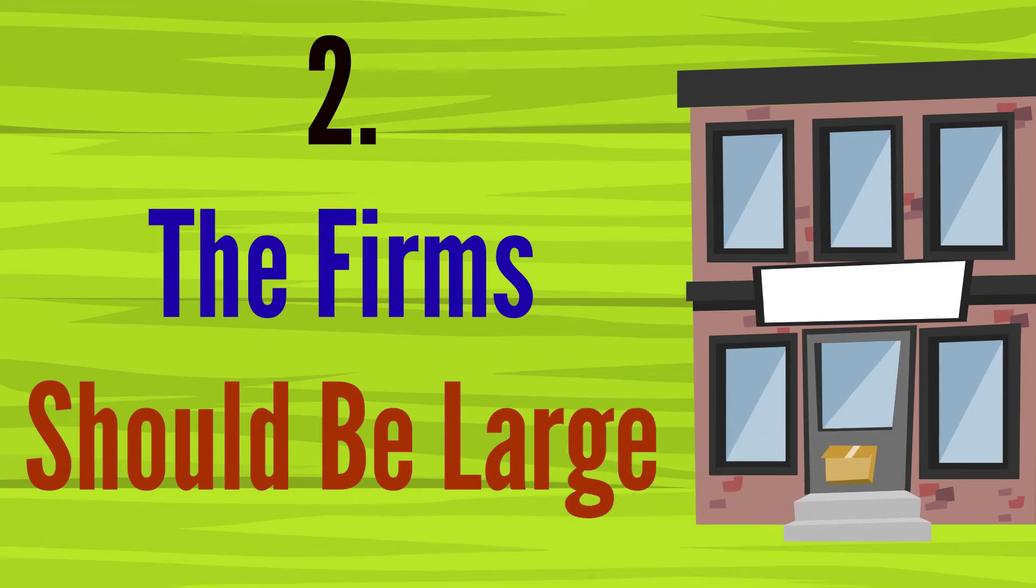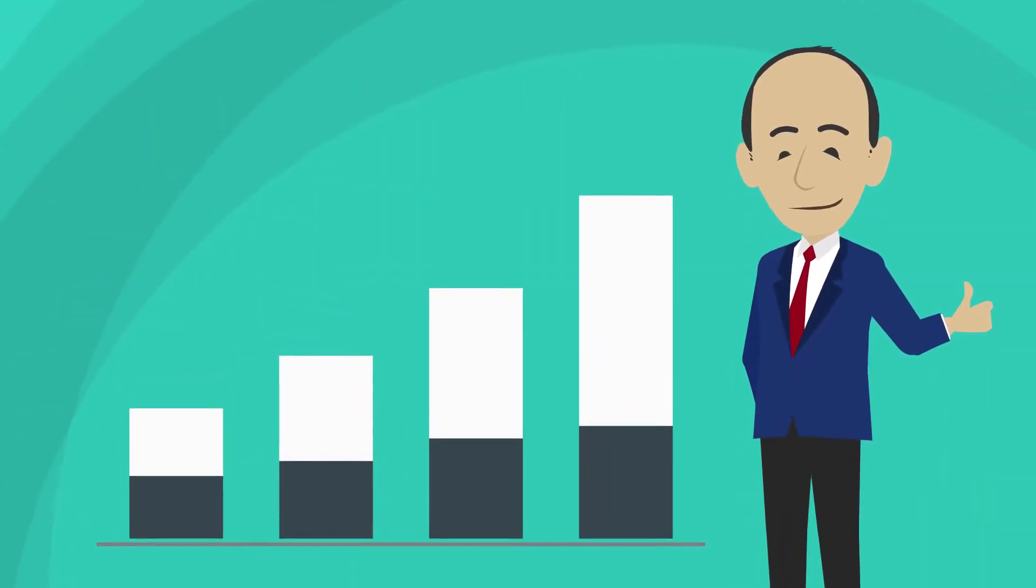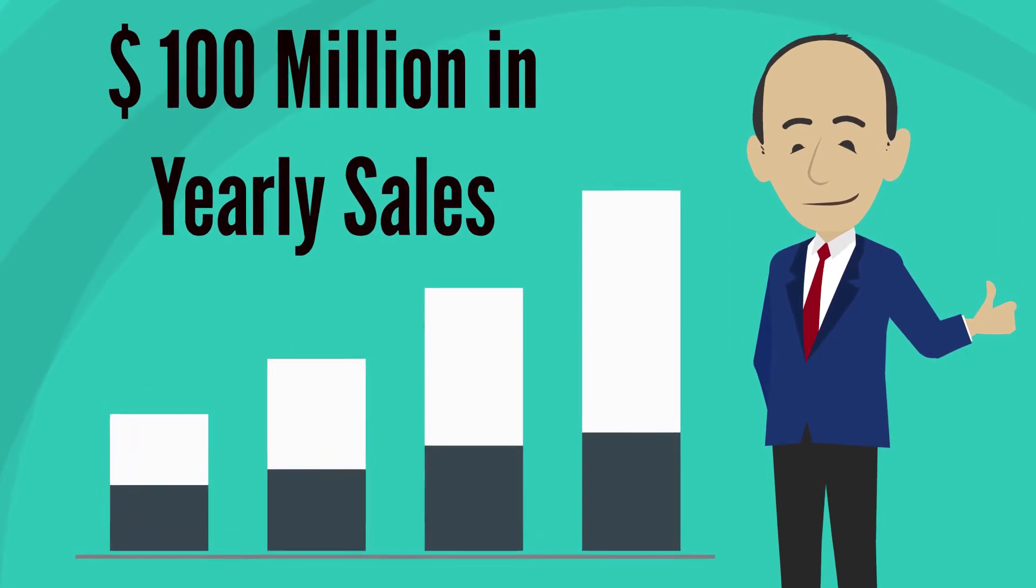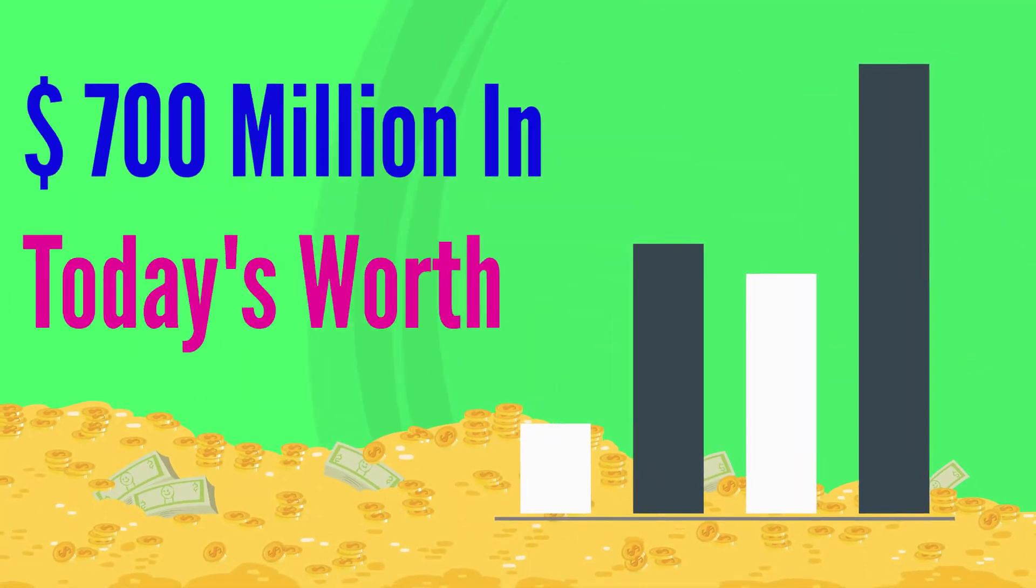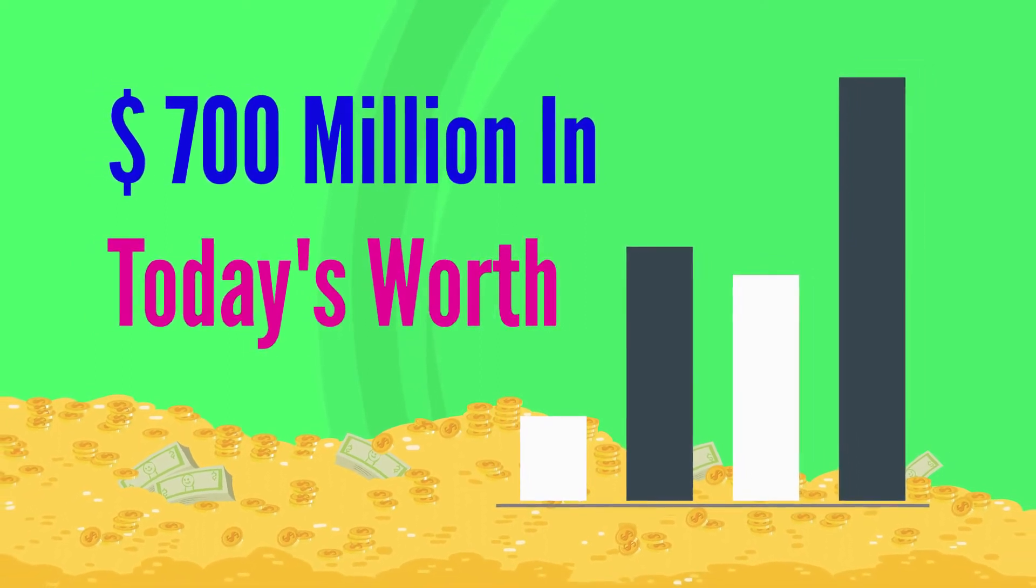2. The firm should be large, which Graham specified as producing greater than $100 million in yearly sales. After inflation, this equals about $700 million in today's worth.